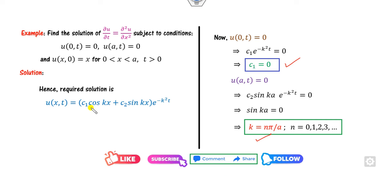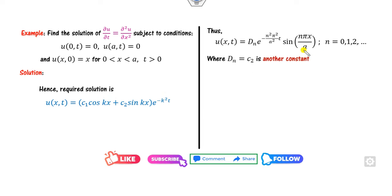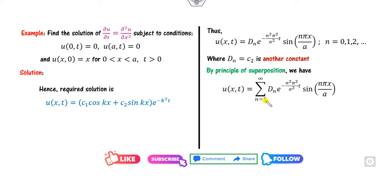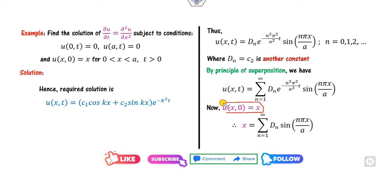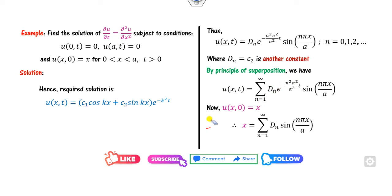Substituting c₁ = 0 and k = nπ/a, and renaming c₂ as dₙ, we apply the superposition principle summing from n = 1 (since n = 0 gives a trivial solution). Now applying step 3 — the condition u(x,0) = f(x) — we set t = 0, giving the equation to find the unknown constants dₙ.